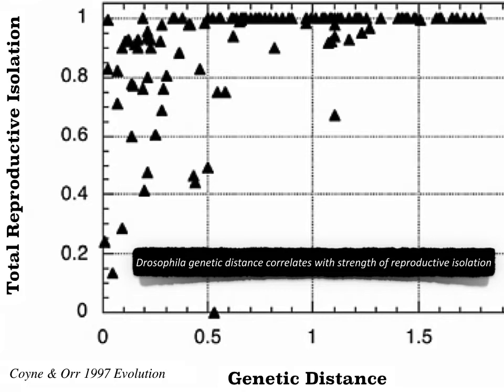A classic study by Alan Orr and Jerry Coyne, published in 1997, looks at the correlation of genetic distance between Drosophila species and the amount of reproductive isolation that occurs. With zero meaning no reproductive isolation and one being complete reproductive isolation or speciation. Each data point is a species pair. They find a positive correlation between genetic distance and total reproductive isolation, which is what you'd expect as evolutionary divergence accumulates roughly a degree of reproductive isolation associated with genetic divergence.